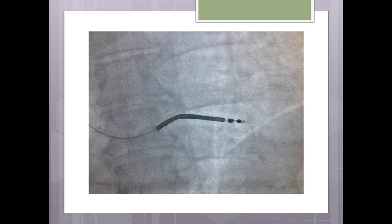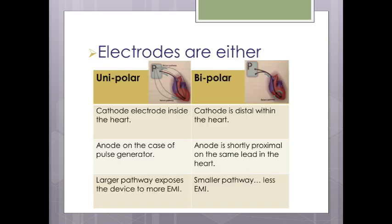Electrodes are either unipolar or bipolar. In unipolar configuration, the cathode is the electrode embedded inside the heart while the anode is the generator casing, usually at the pectoral region — a large area for electricity to traverse. In bipolar, cathode and anode are on the same lead, both inside the heart, so electricity does not leave the heart. This is important because electromagnetic interference is more common with unipolar than bipolar.